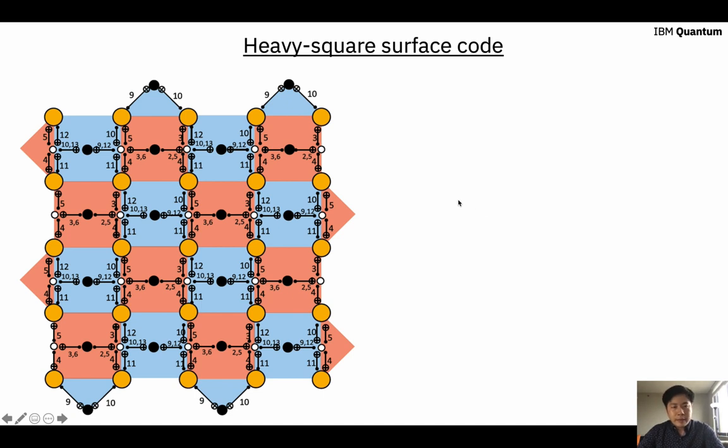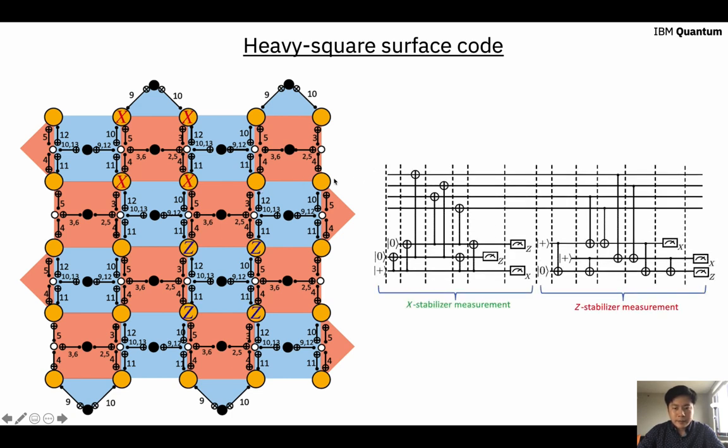We also introduced another type of code called the heavy square surface code, where both the data and ancilla qubits are put on the heavy square lattice, where there are qubits on both the vertices and edges of a square lattice. It has a hybridization of a degree four and a degree two, so it has lower degrees than the standard surface code. The stabilizer is the same, and the measurement circuit is same as the four-body gauge operator in the heavy hex code. The whole depth of the circuit is 14 time steps, as opposed to the six time steps in the standard surface code.